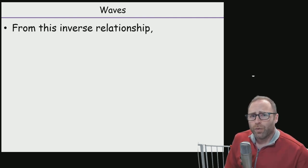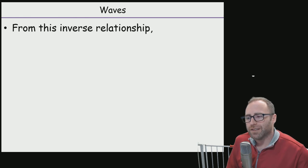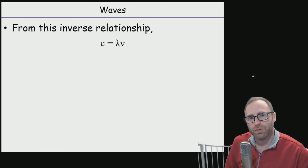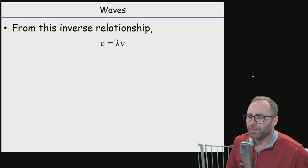So we alluded to it a little bit earlier. As the wavelength increases, our frequency will decrease and vice versa. It's an inverse relationship. What we'll find is that inverse relationship comes in the form of this equation. The speed of our wave is going to always equal, in a vacuum, the wavelength times the frequency. C speed of light equals wavelength of the light times the frequency of the light.